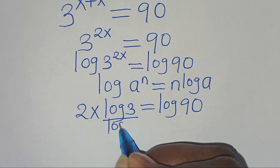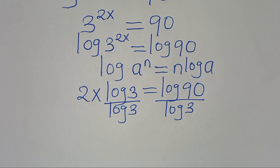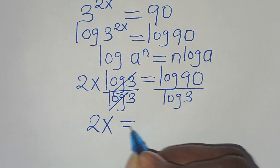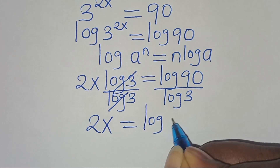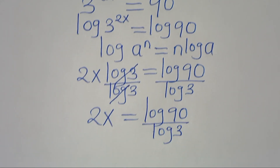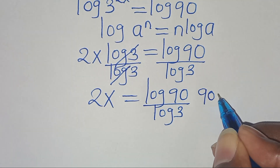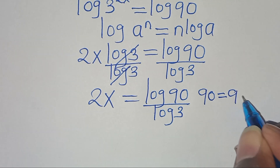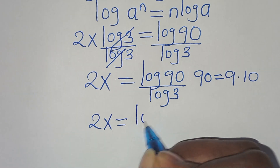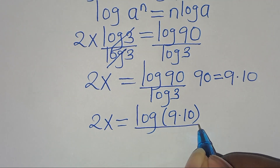Let's divide both sides by log 3. Log 3 and log 3 simplify, so now we have 2x equals log 90 divided by log 3. Now we can express 90 as 9 multiplied by 10, so this means we have 2x equals log(9 × 10) divided by log 3.